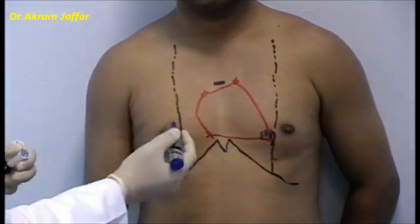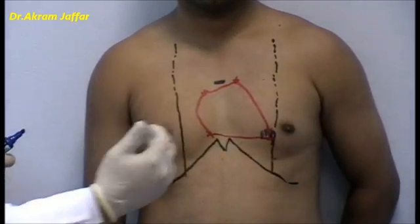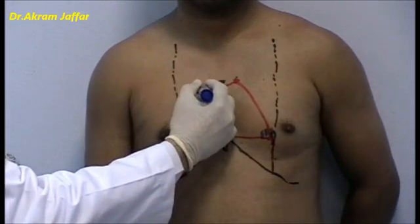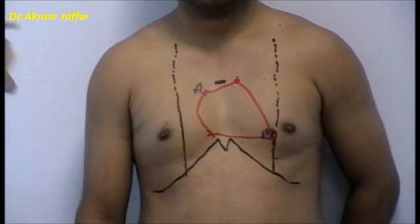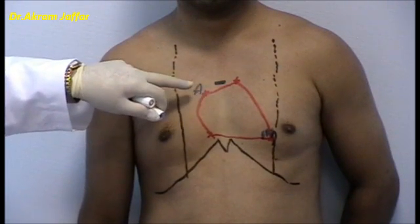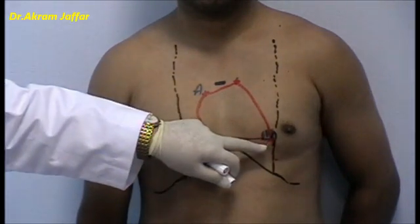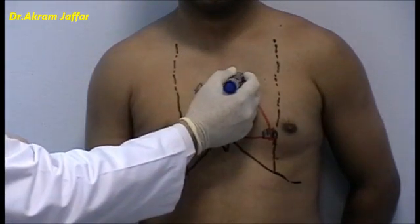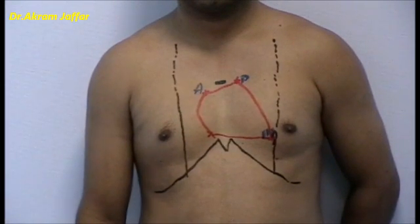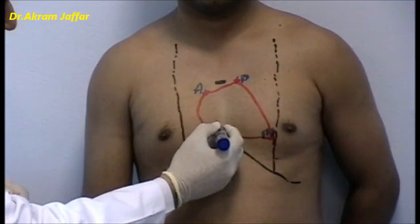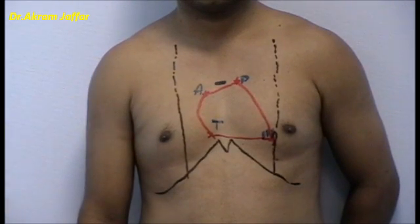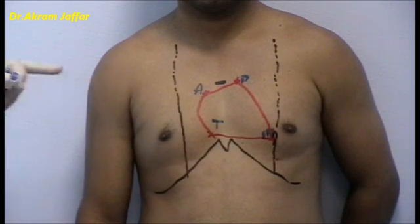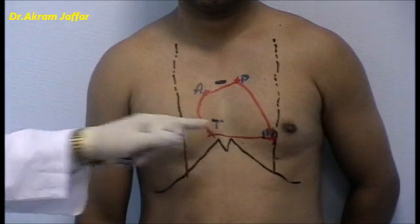Blood ejected from the left ventricle goes into the ascending aorta, arch and descending aorta, so the auscultatory area for the aortic valve is located in the second right intercostal space. The mitral area is at the apex in the fifth intercostal space just medial to the midclavicular line. The pulmonary valve auscultatory area is in the second left intercostal space. The tricuspid area is located behind the lower part of the body of the sternum. All valves anatomically are located behind the sternum.